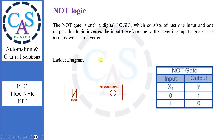Move further for NOT logic. The NOT gate is such a digital logic which consists of just one input and one output. This logic inverses the input; therefore, due to the inverting input signals, it is also known as an inverter. From the table: if the input is low, then the output will be high. If the input is high, then the output will be low.